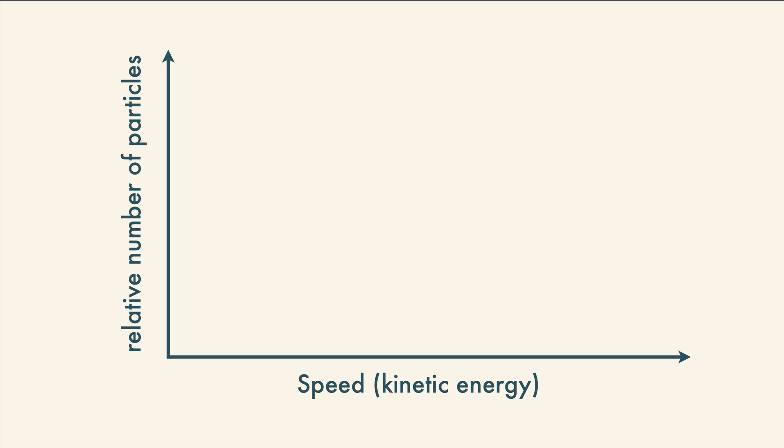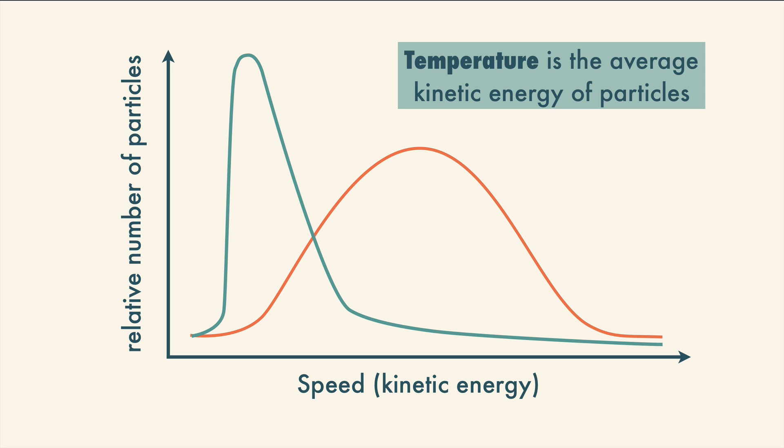But, we can't easily take a snapshot of just one or a few particles. When we measure the temperature, we're looking at the average kinetic energy of many particles. This curve may represent a fairly warm temperature, and this curve, a relatively lower one. There are lots of particles that have the same kinetic energy at both temperatures. But again, temperature is the average kinetic energy of all the particles.